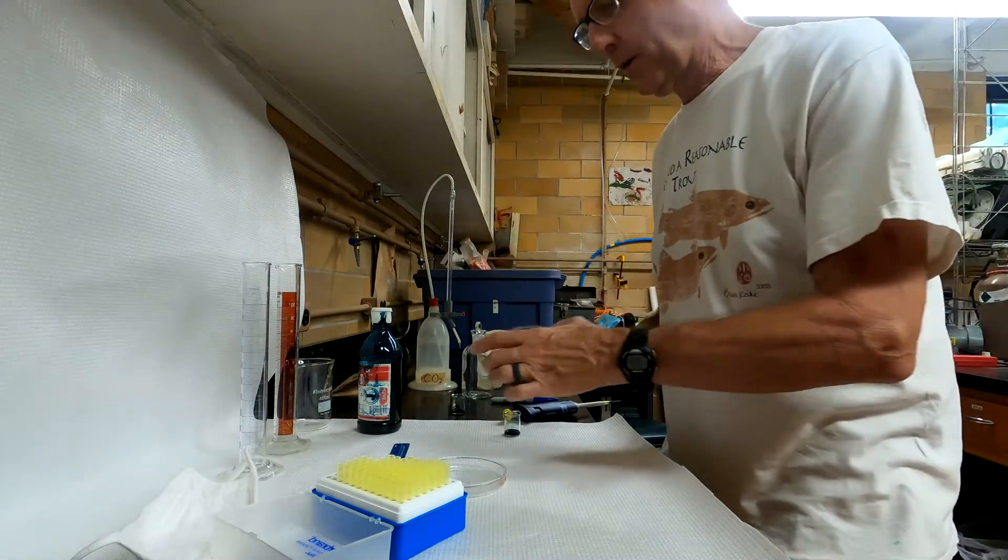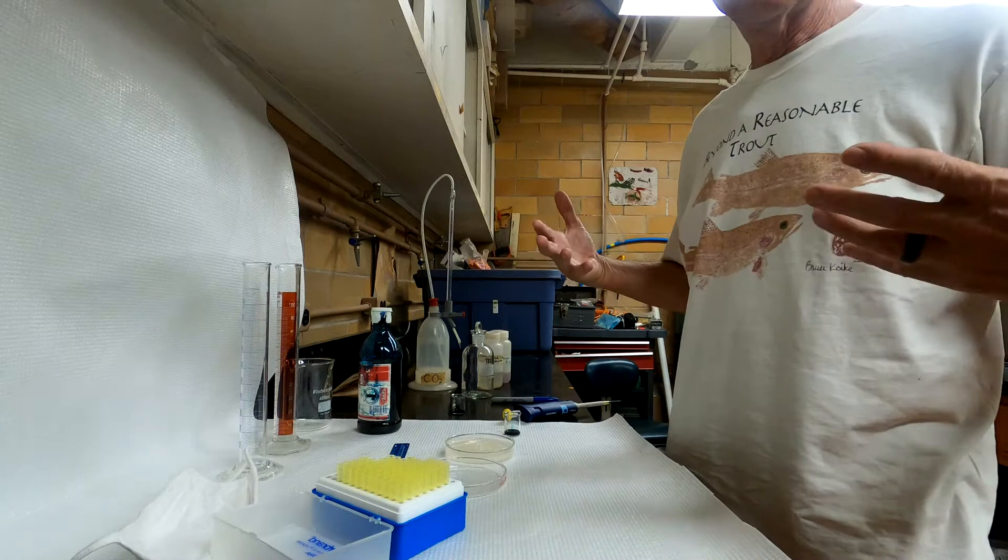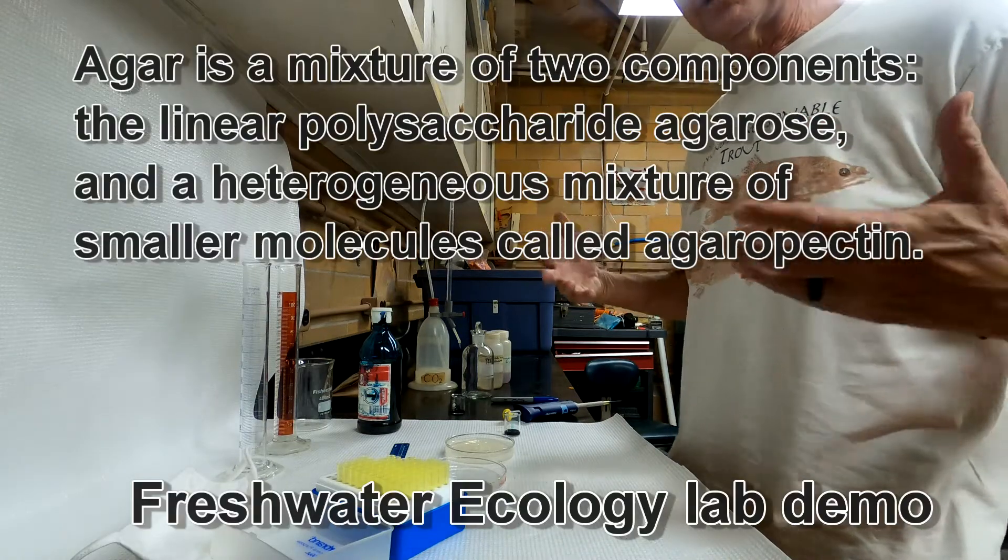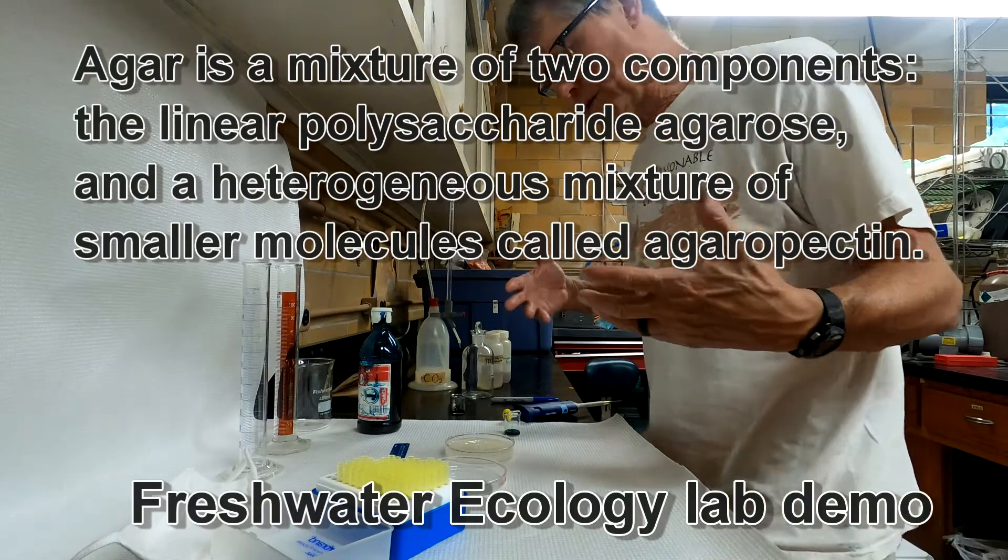The petri dish has about 1% agar in it, which is a polymer that really doesn't do anything other than keep the diffusion from being turbulent. It allows for molecular diffusion only.